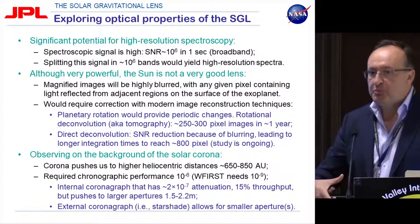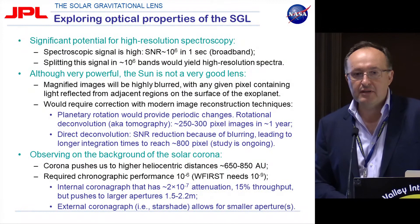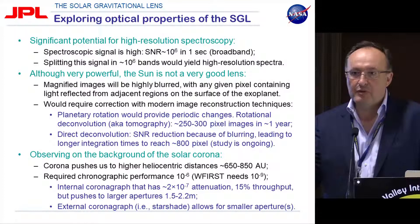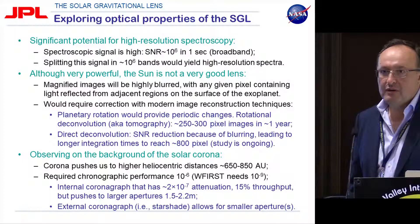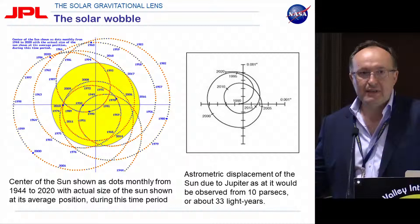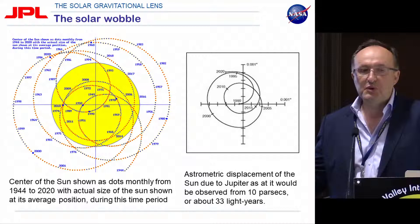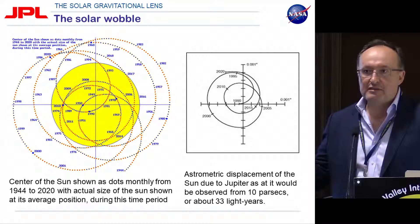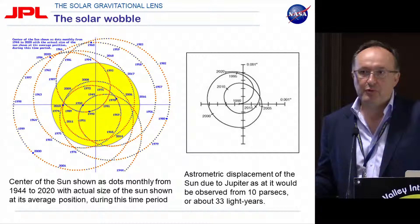Another option is flying an external coronagraph — a star shade — which would ultimately allow smaller apertures, perhaps flying several small spacecraft with one star shade for imaging. An additional challenge is that our Sun is not static. The center of mass of our Sun moves with respect to the solar-system-centric frame because it is being pulled by Jupiter, Saturn, and the other giant planets. The advantage is that we know the motion of the planets very well, so this effect is known and we can use propulsion on board to compensate for this motion.